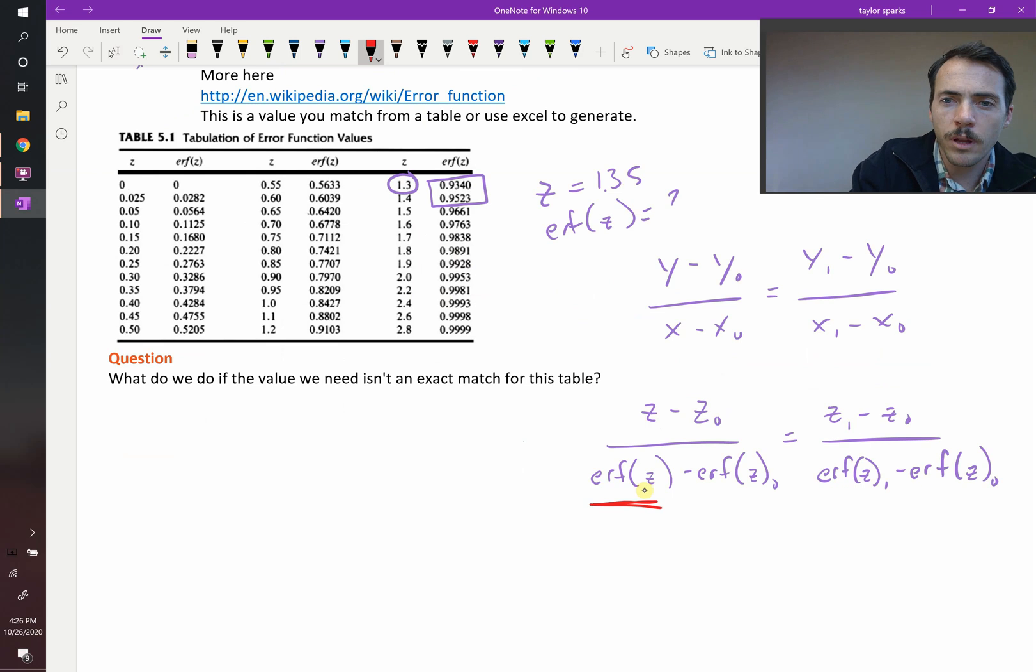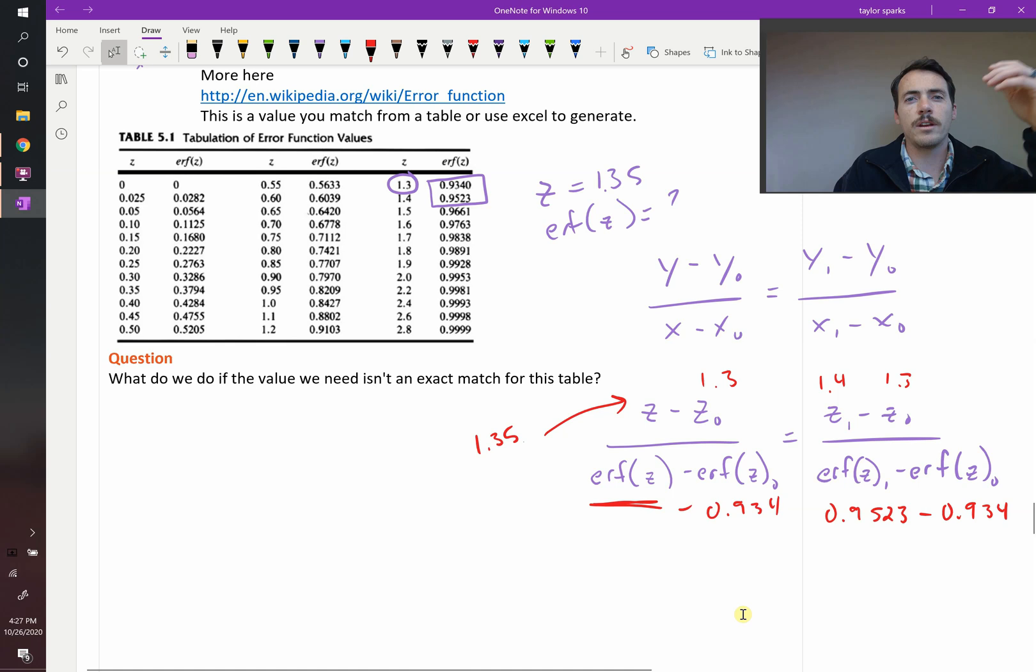For the z0, we're going to use the value below it, so that's 1.3. Here for z1, we're going to use the value above it, so that's 1.4 minus 1.3. Here we have the error function of z1, that's 0.9523 minus the value below, which is 0.934. And this again would be 0.934. So we could plug all that in and solve for what the error function of z is, if z is this value in between those. That's linear interpolation.